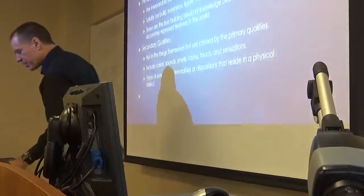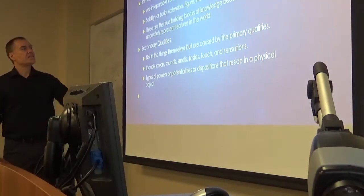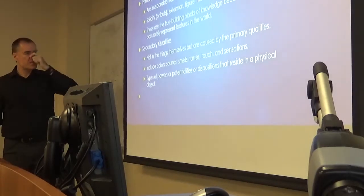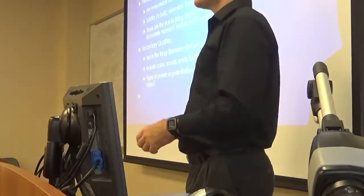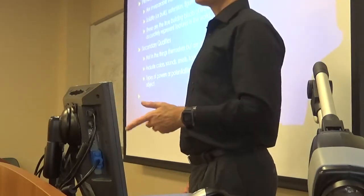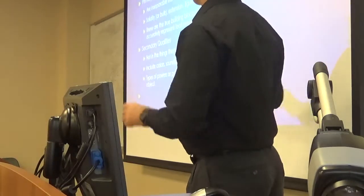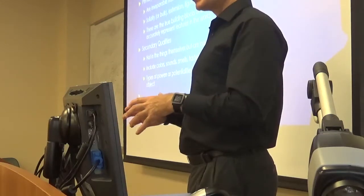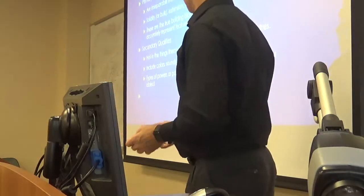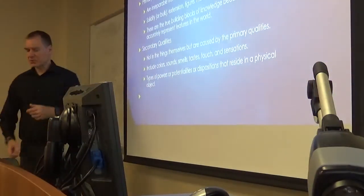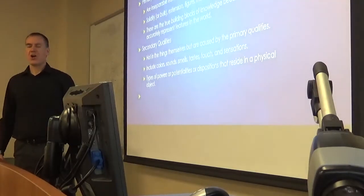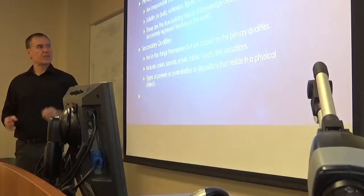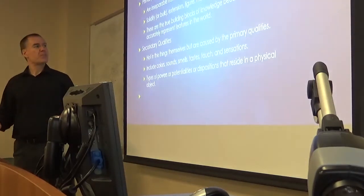Something we've mentioned previously, but something that's going to infest the entire class, is this primary-secondary quality distinction. We have two sets of qualities: primary and secondary. The primary qualities are what we call the real qualities — they're out there in the physical world. Standard examples, if you talk to philosophers who believe in these things, they would give the usual suspects: solidity, extension, being three-dimensional, figure, movement, rest, number, all that stuff.